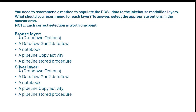The bronze layer is where raw data is landed with minimal transformation. A copy activity in a pipeline is the best option because it is optimized for moving large volumes of data. It efficiently loads raw transactional data like point-of-sale data into the lakehouse. It also supports various data sources including databases, APIs, and files.